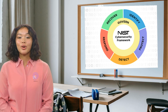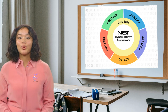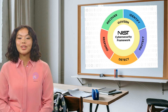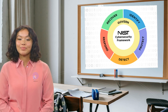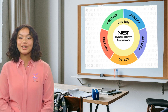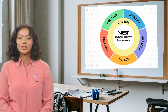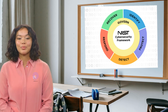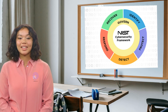NIST-CSF is built around five core functions that guide organizations in managing cybersecurity risks. Think of it as a roadmap. Identify helps you understand what assets need protection. Protect focuses on safeguards to keep those assets secure. Detect ensures you can find potential threats quickly. Respond outlines steps to handle a breach. And finally, Recover ensures you bounce back and keep going.